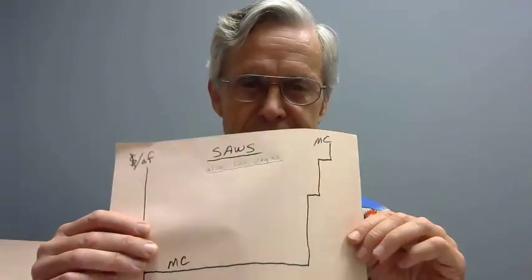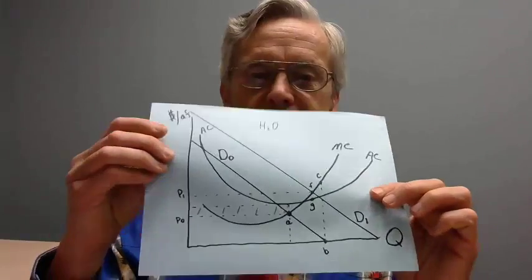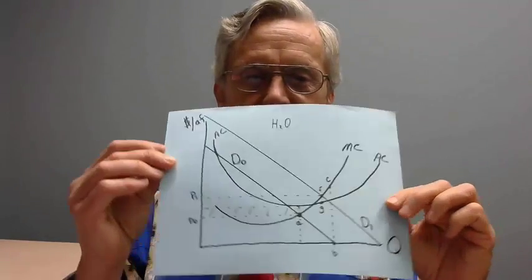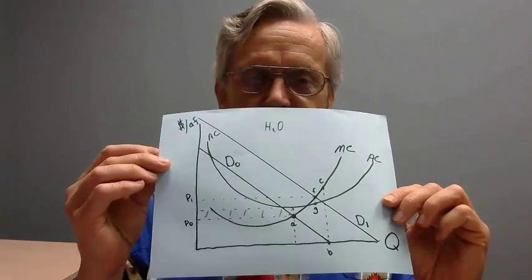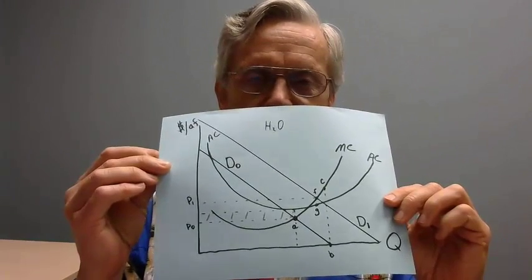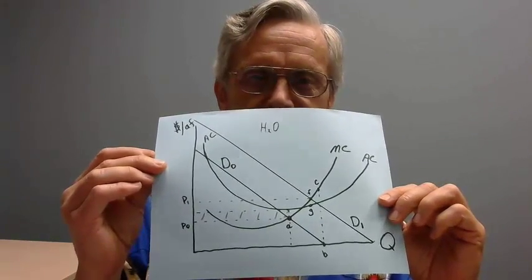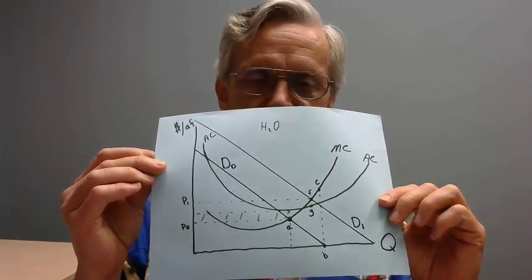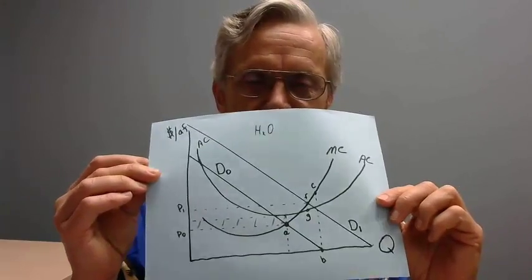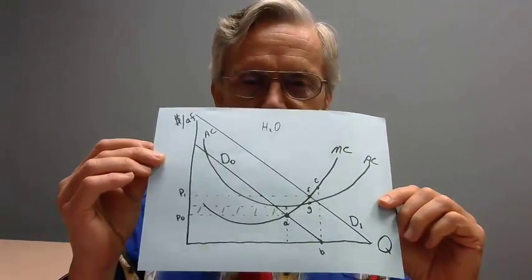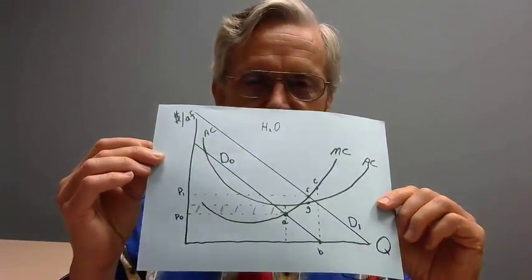Today we're going to move back to something more conventional looking, because while that previous graph does illustrate something quite important — mainly that there are typically several sources of increasing cost contributing to an entity's water supply — it has its limitations. So we'll go back to a more normal-looking graph. It's not especially normal for this course, but when you took principles, you saw a graph like this in the chapter on costs.